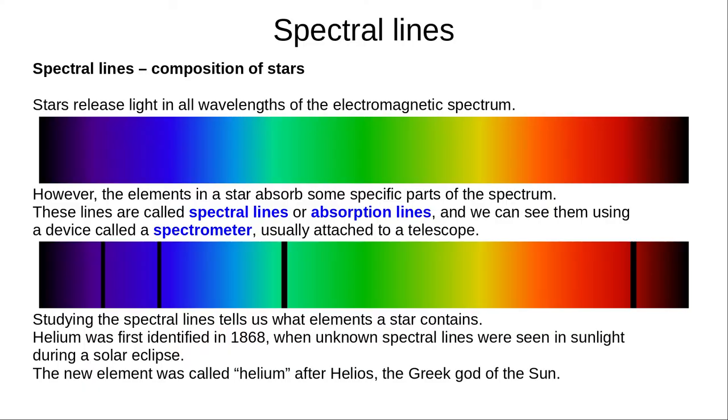Stars release electromagnetic radiation across the entire spectrum. This image shows just the visible spectrum, but all other wavelengths are produced. However, the elements in a star absorb some specific parts of the spectrum. In the second image, we can see four black bands where that particular colour has been absorbed.